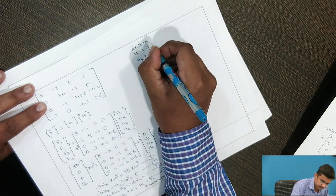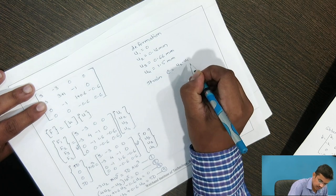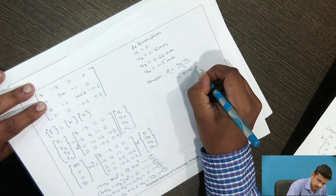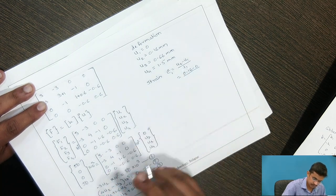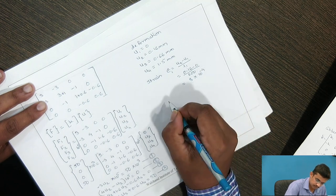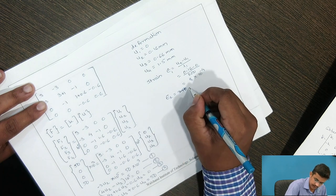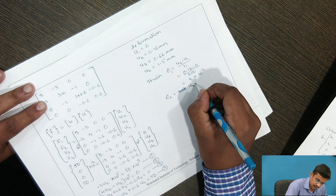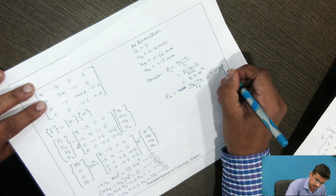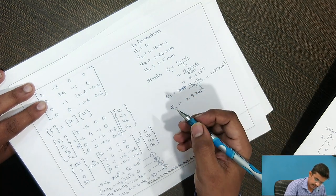We now calculate strain. The formula is change in length divided by original length. For element 1: (U2 − U1) / L1 = (0.16 − 0) / 200 = 8 × 10^−4. For element 2: (U3 − U2) / L2 = 1.25 × 10^−4. For element 3: the strain is 2.8 × 10^−4.